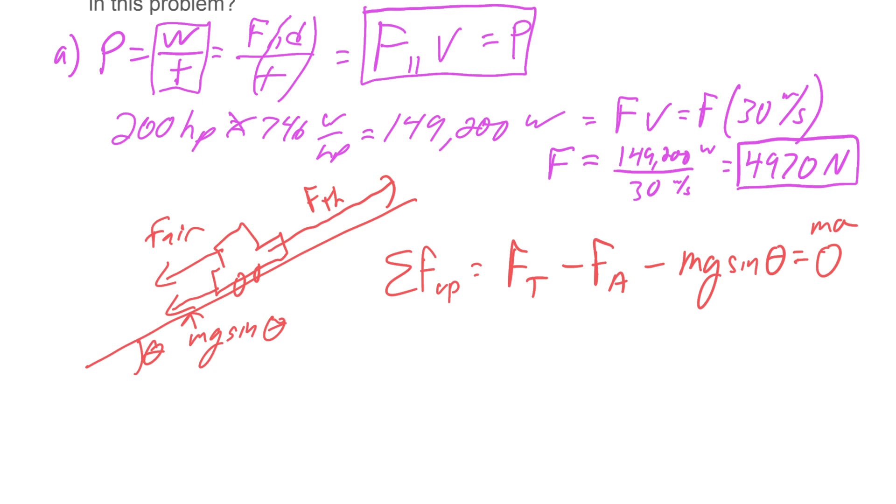At this point, you can see basically if the thrust is 4,970, the air is what we're looking for, and then mg sine theta. Let's go ahead and do that. What was the mass of that car? Looks like it was 2,000 times 9.8 sine of 10 degrees. Let's go ahead and plug that one in. We get approximately 3,400 newtons.